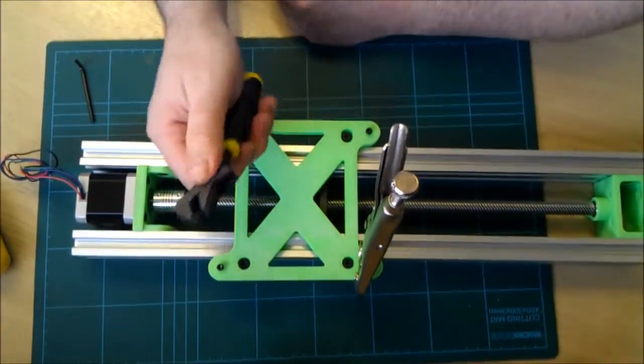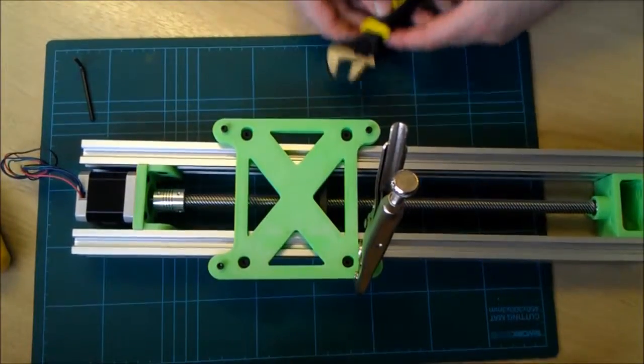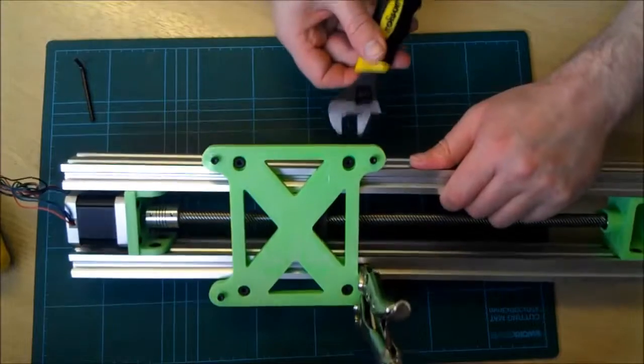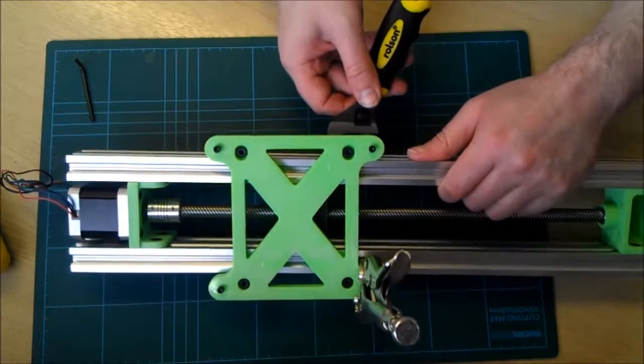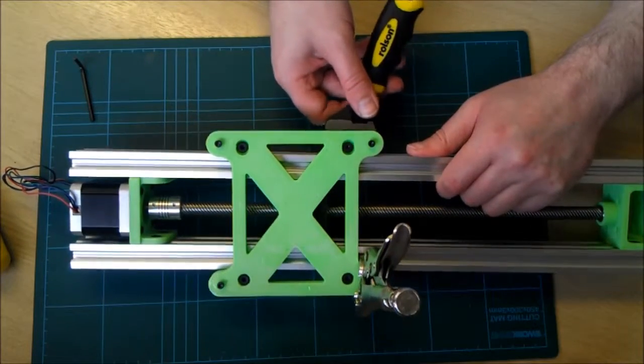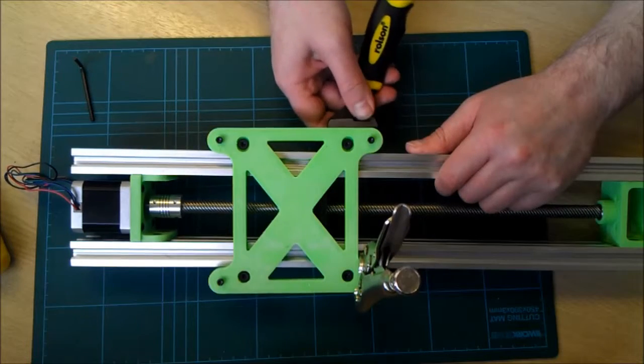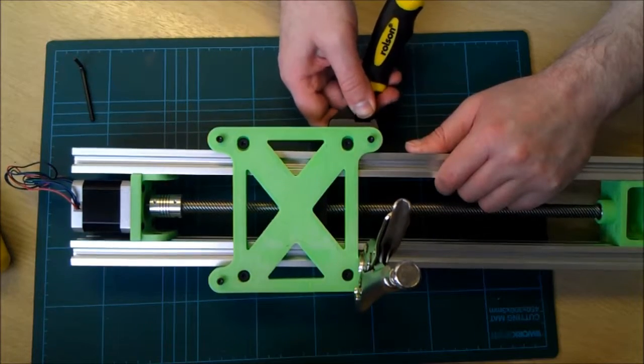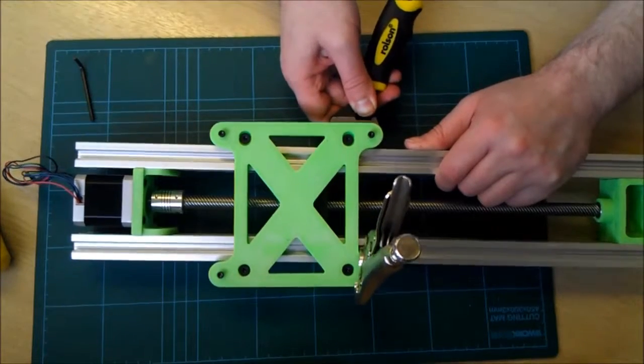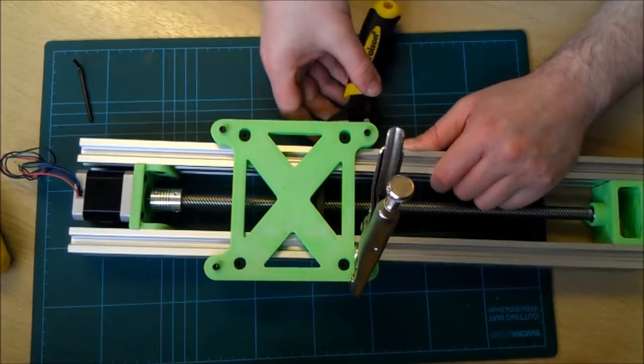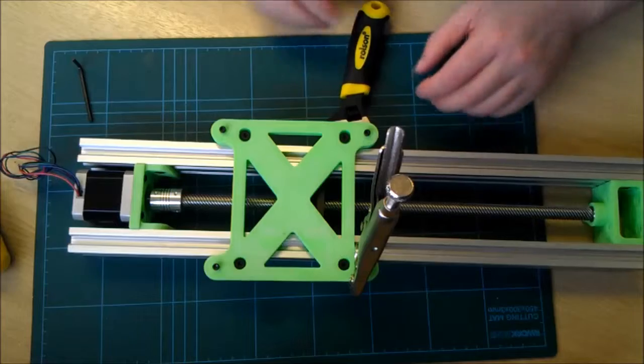Once that's clamped, take an adjustable spanner and actually tighten around the nut. We're pushing the spanner gently so it's touching the V slot itself. Once that's tightened tight, just rest it there. That frees up your hands.